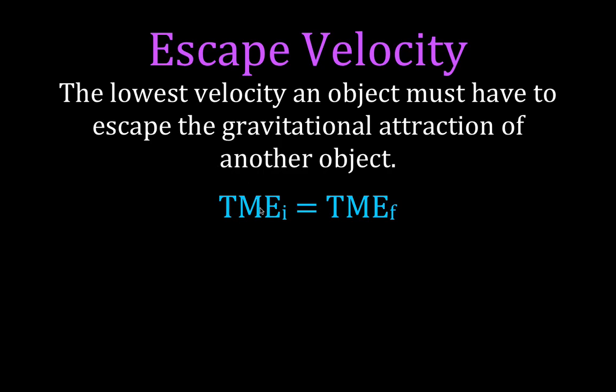That means the initial total mechanical energy has to be equal to the final total mechanical energy. How we come up with the idea of escape velocity is very interesting — it's more interesting than just what the escape velocity is, because we can just look that up. The total escape velocity for the Earth is like 11.1, 11.2 kilometers per second. But what does that mean and how do we come up with that? That is the most interesting thing you can explain about escape velocity.